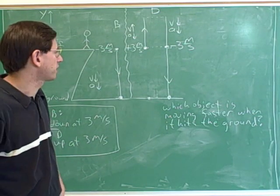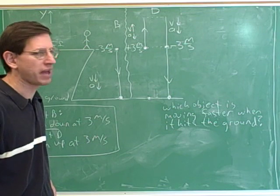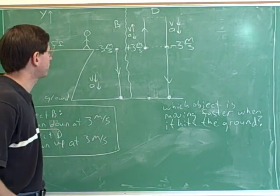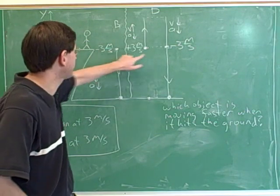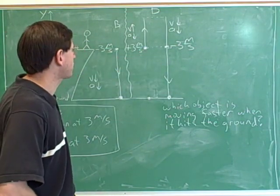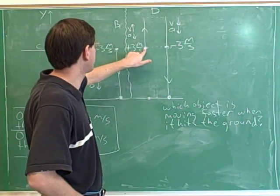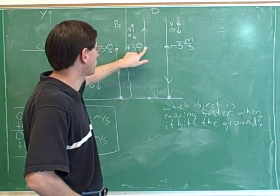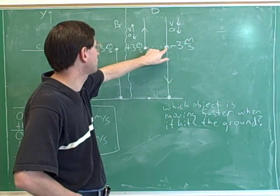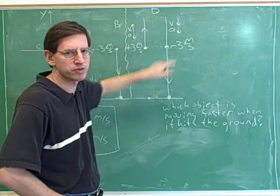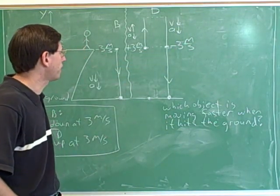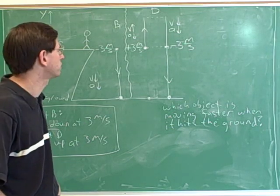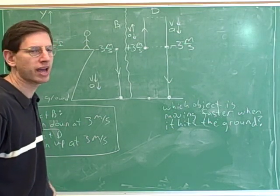I hope this problem helps convince you that it's very useful to draw the paths of objects and to try to write down what you know about them. It was very useful here to compare the path of object B with the path of object D. The crucial point was realizing that object D had a velocity of negative three meters per second at the cliff height. So try to get in the habit of drawing the paths of the objects in any problem, and if there's more than one object, draw more than one path.